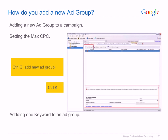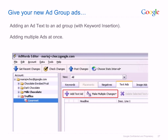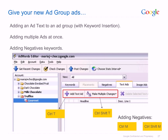Press Ctrl plus K to add a keyword to this ad group. You can generate a list of keywords using the AdWords keyword tool. Press Ctrl plus Shift plus K to add multiple keywords to this ad group. To add an ad text to this ad group, click on the Add Text Ad button at the ad group level. It is possible to add multiple ad texts at once by clicking on the Make Multiple Changes button. For a shortcut to add new ad texts, press Ctrl plus T. To add multiple new ad texts, press Ctrl plus Shift plus T. If you wish to add negative keywords, press Ctrl plus M. To add multiple negative keywords, press Ctrl plus Shift plus M.